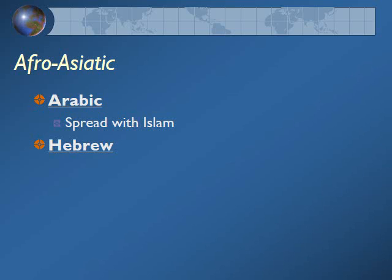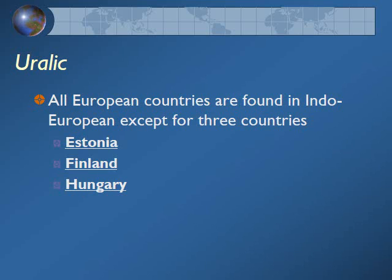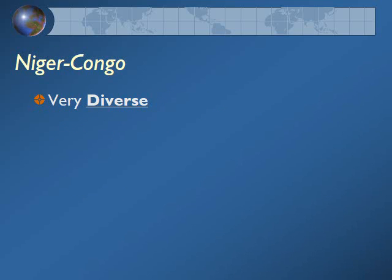Afro-Asiatic covers Western Asia and North Africa. The two largest languages are Arabic, which was spread through the religion of Islam, and Hebrew, connected to the religion of Judaism. There's also a small family group called Altaic, where the language is Turkish. Eurolic is interesting — most European languages come from Indo-European, but Estonia, Finland, and Hungary have their own language group, so their languages feel different from the rest of Europe. Niger-Congo is very diverse with no dominant language, and we'll talk later about how that creates problems when a country tries to unify with so many different languages.